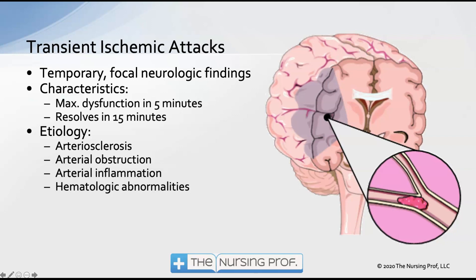The etiology of TIAs includes atherosclerosis, arterial obstruction, or arterial inflammation. There isn't one definitive cause — some patients have TIAs without significant signs of atherosclerosis. Theories include arterial obstruction or inflammation that occurs and then resolves.